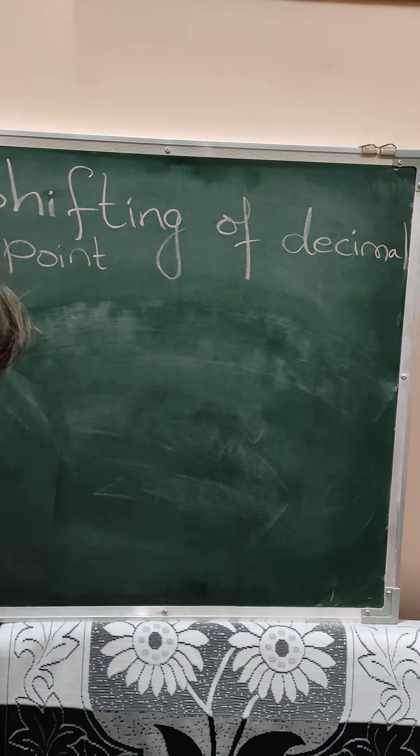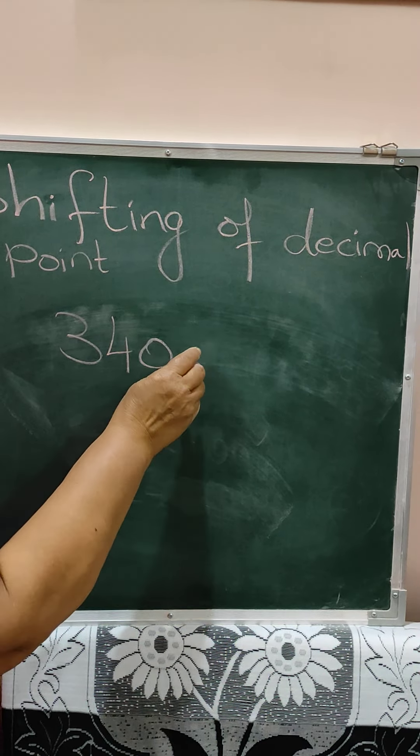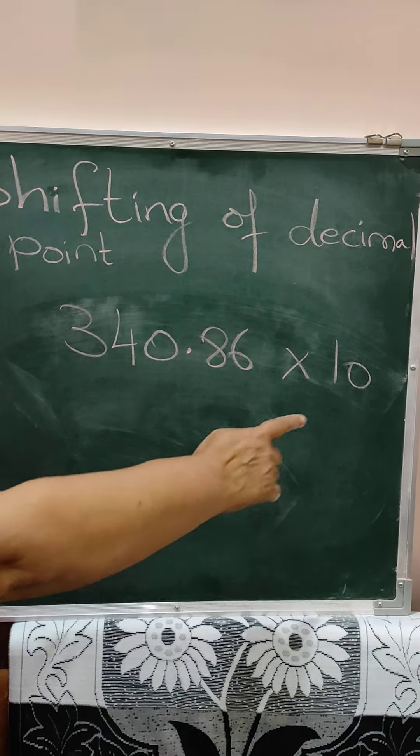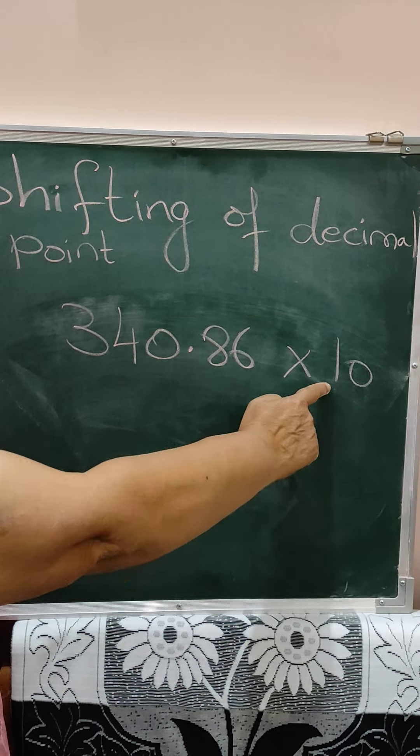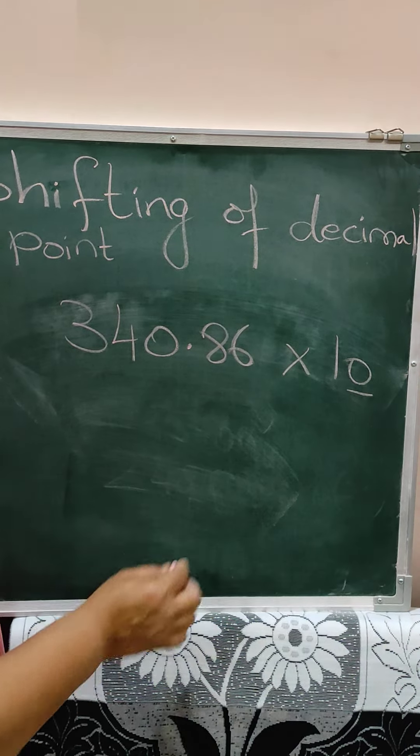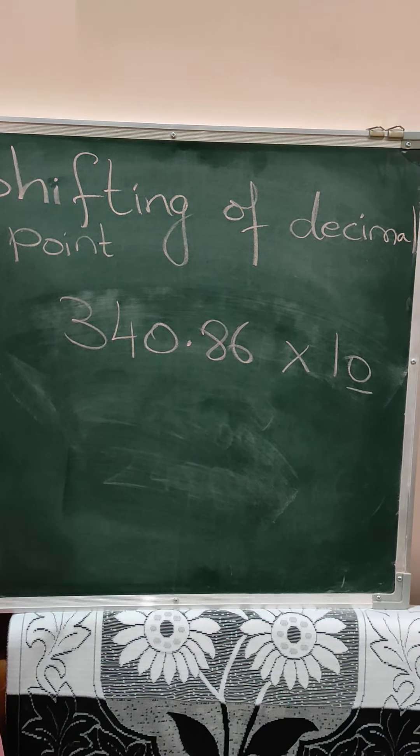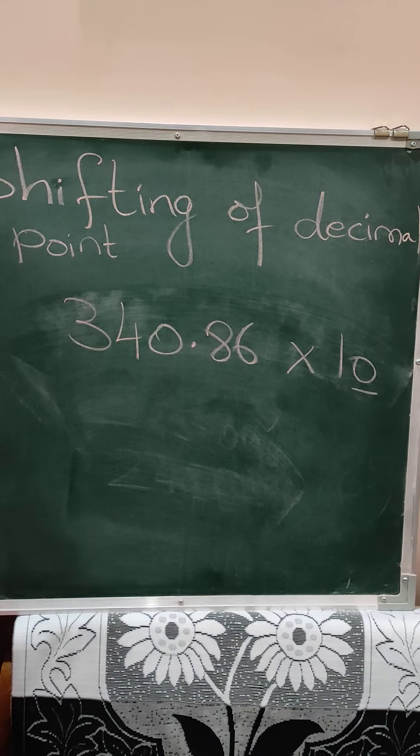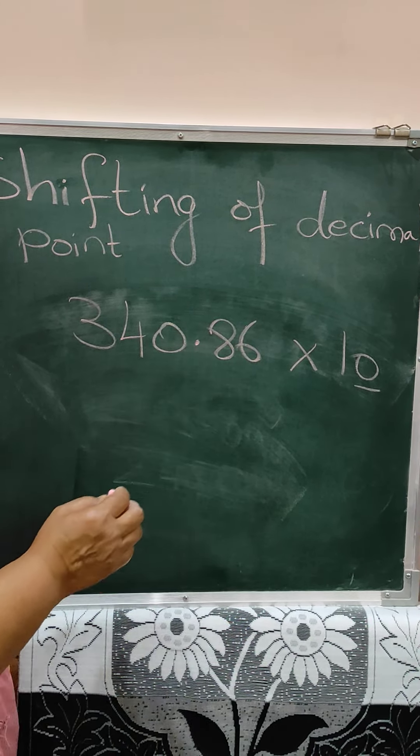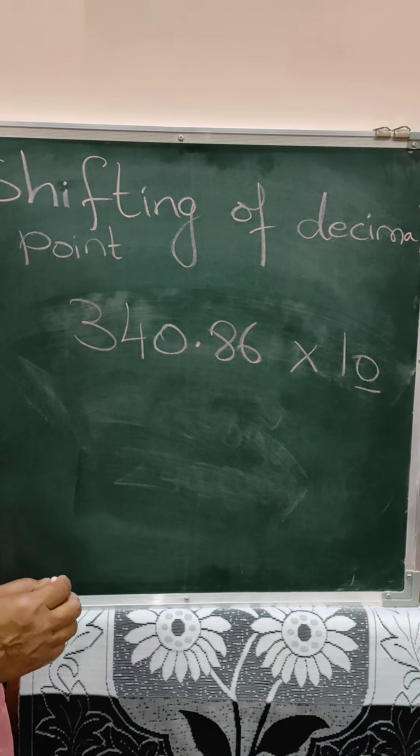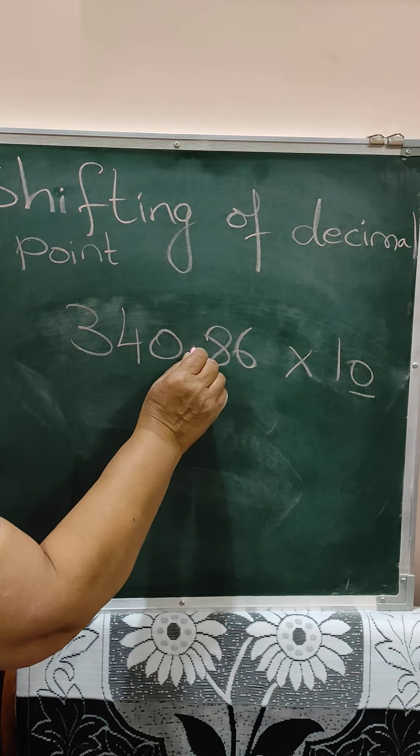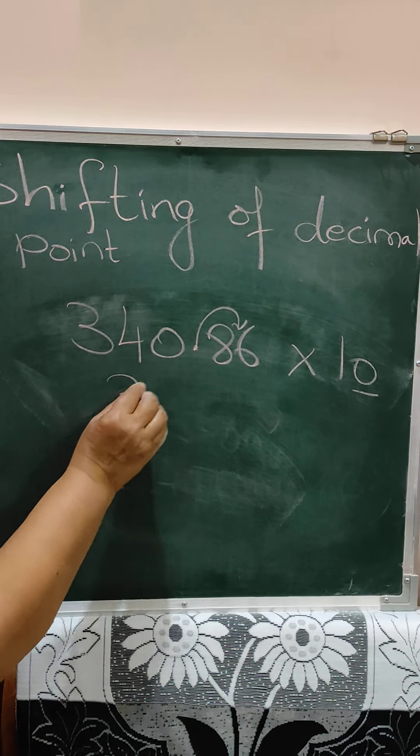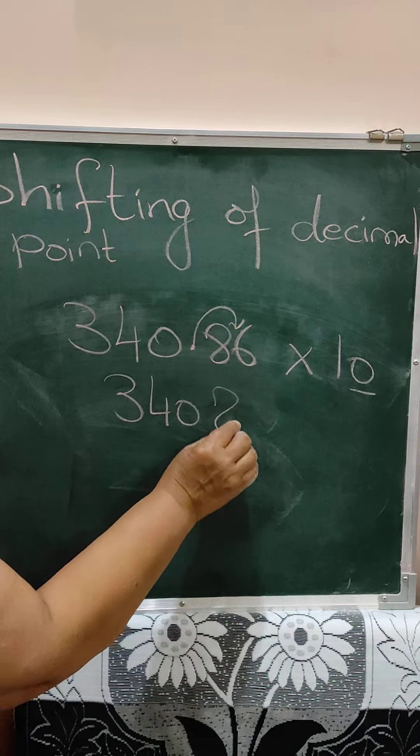We will take many more examples. Now suppose it is 340.86 multiplied by 10. Now here, there is one, so this number multiplied by one will give the number itself. There is only one zero. So what we have to do is shift the decimal point. Shift the decimal point to the right. See children, learn this. In multiplication, we shift the decimal point to the right. And in division, we shift the decimal point to the left. So here shift the decimal point to the right only by one digit. Why one digit? Because there is only one zero. So here the answer will be 3408.6.